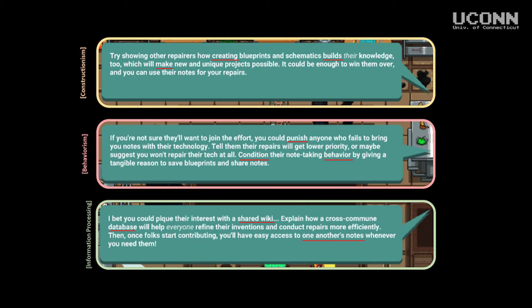For the second choice, you're given the same three learning theories as options and can use the textual clues to decide the best response for that individual. In this case, the information processing option focuses on the development of a shared wiki, a database, and collaborating to create notes — a great option for somebody who wants to store information. It also incorporates technology integration as part of the learning objective built into the game, doing what the ISTE change agent standard really asks you to do: think through how to convince somebody to integrate a particular kind of technology or solve a problem in a particular kind of way.